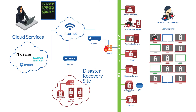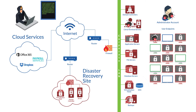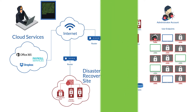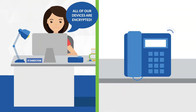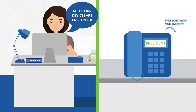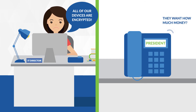What you are left with are a few devices that were turned off, and hopefully some snapshots from your SAN. At this point, you are calling your president to explain that all your devices are encrypted, and you are being held ransom for $50,000.